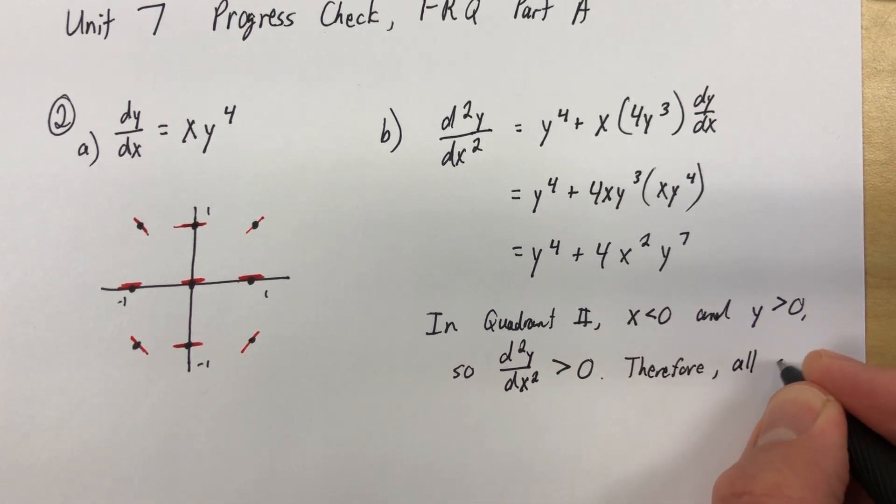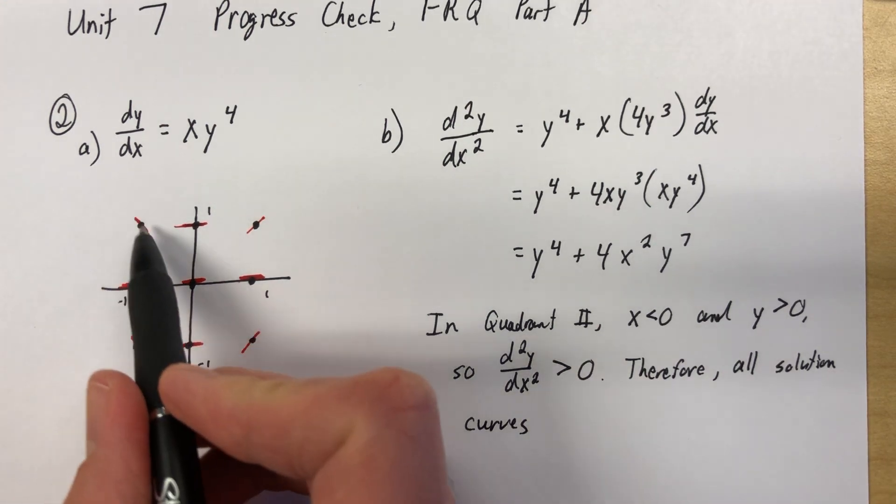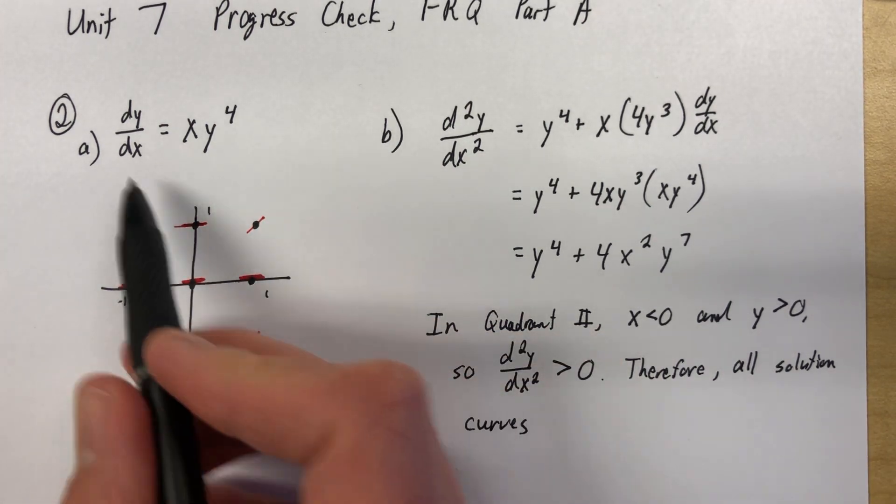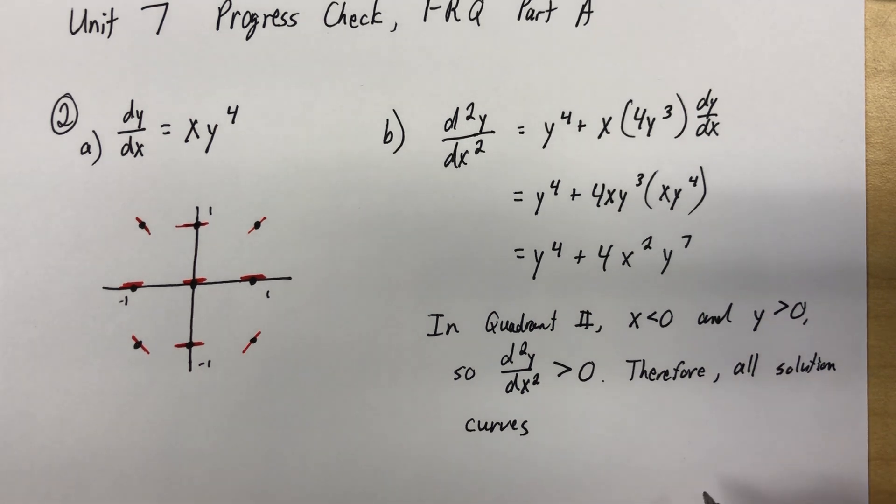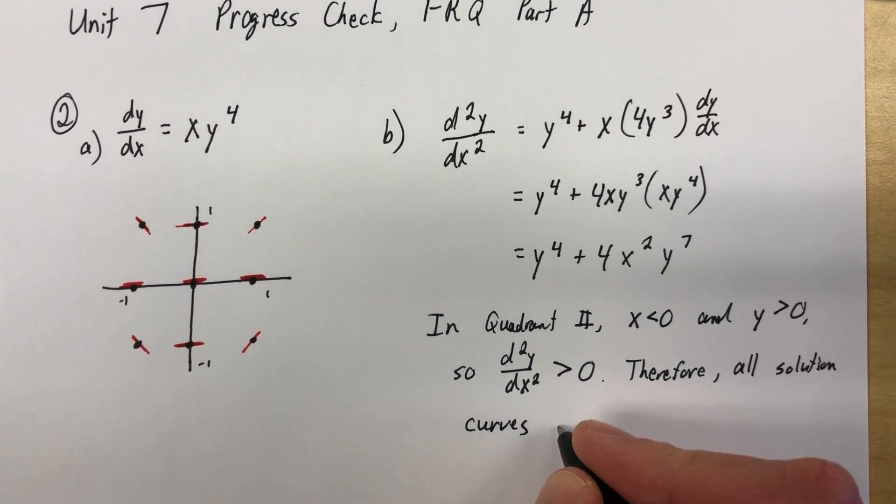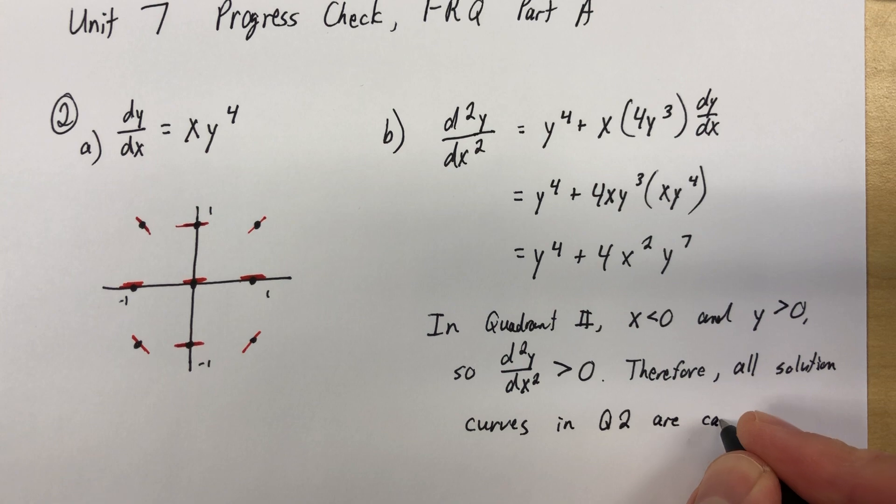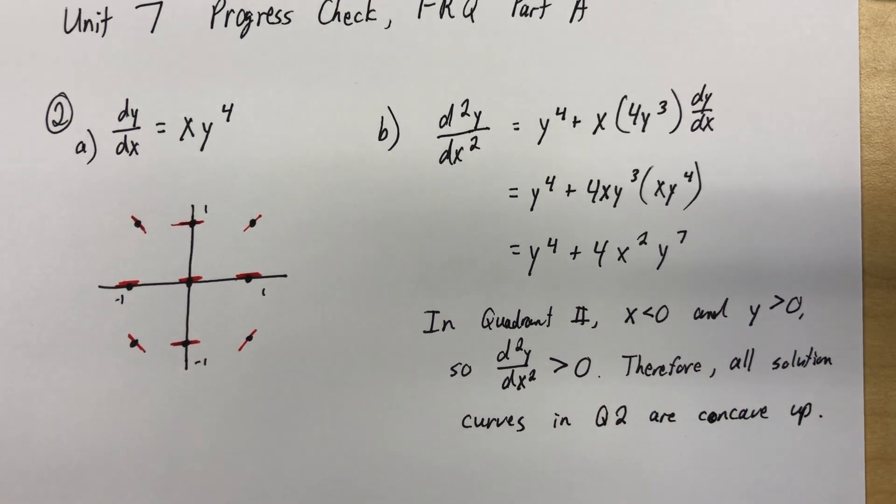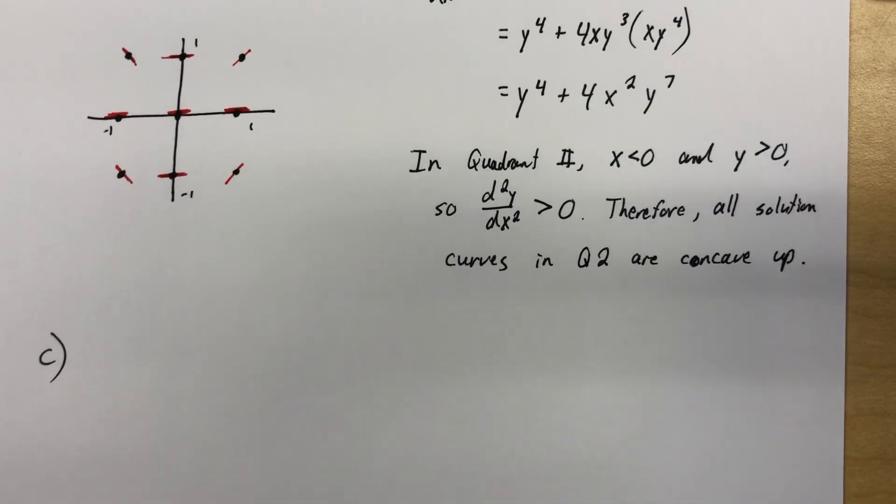Therefore, all solution curves. Solution curves means that whatever I would draw through here that follows the pattern of the slope field. All solution curves, depending on the c value, all solution curves in quadrant 2, feel free to abbreviate, are concave up. That's part 2, or part B. Quadrant 2. Here goes. Part C.